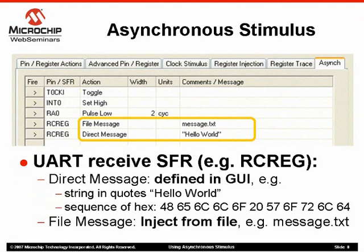For the UART receive register, such as RC reg, you can inject a message of characters to the UART by clicking the fire button any time. Such a message will be fed to the UART according to the baud rate configuration. The content of a message is specified in the last column, the comment/message column. For RC reg, there are two ways to specify the message to be used. The easiest way is to select direct message in the action cell, and then specify the text string enclosed by double quotes in the comment/message cell. Characters H-E-L-L-O space W-O-R-L-D will go to RC reg character by character according to the baud rate setting. If the UART is not turned on, or the receive buffer of the UART is full, then the pending characters will be lost, as in real hardware.